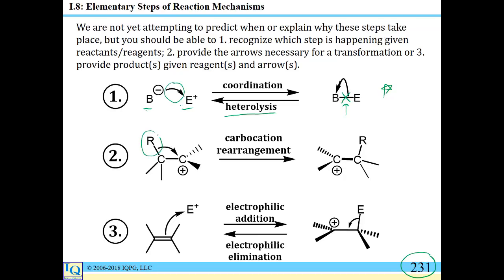Carbocation rearrangement occurs when you move some species — an alkyl group or a hydride — from one carbon to an adjacent carbon. Electrophilic addition is when an electrophile adds to a pi bond; there must be a pi bond present. Electrophilic elimination, going the other way, involves eliminating an electrophilic species and forming a pi bond.